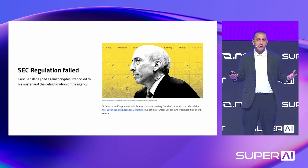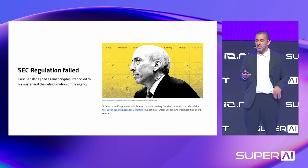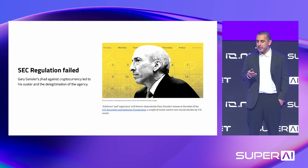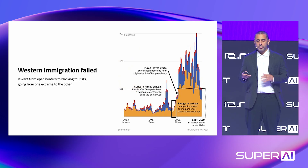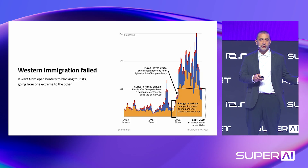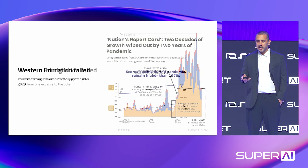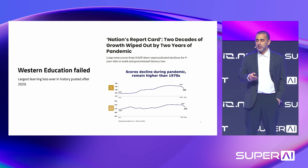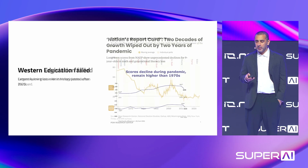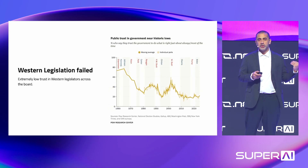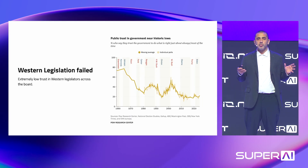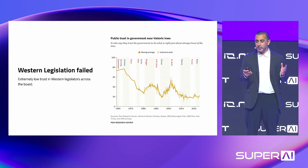SEC regulation failed — Gary Gensler, who's no longer running the SEC, waged this jihad against cryptocurrency, and his actions were called arbitrary and capricious. Western immigration failed, going from open borders to blocking tourists — from one extreme to the other. Western education saw a massive drop in achievement, with two decades of educational growth wiped out by the pandemic. And trust in government has just fallen off a cliff over the last several decades. It's not just one political party — it's really a very bipartisan effort.